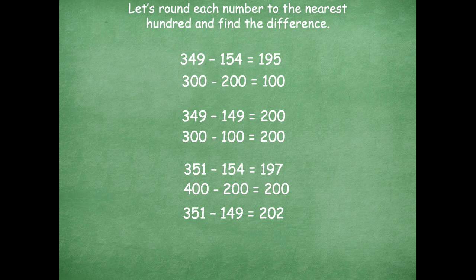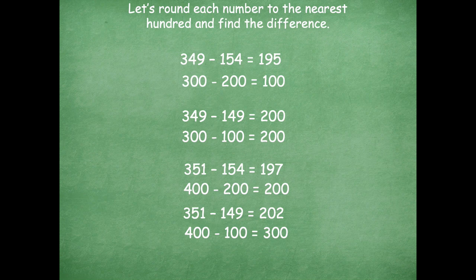Here's the last one — go ahead and round 351 minus 149 to the nearest hundred, then click play when you're ready. You would round to the nearest hundred: 400 minus 100 equals 300.